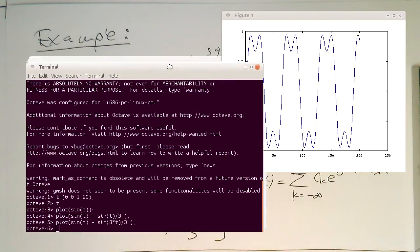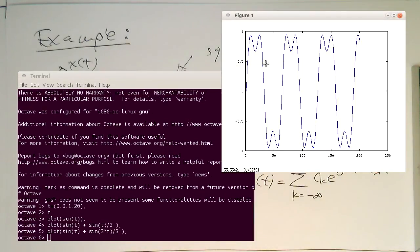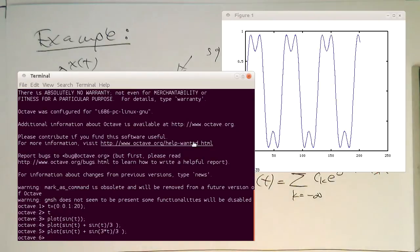Okay, so now we see this looks already a bit like a square wave. What we can do is continue with this game by adding sine of 5 times t divided by 5, and then let's try this out.